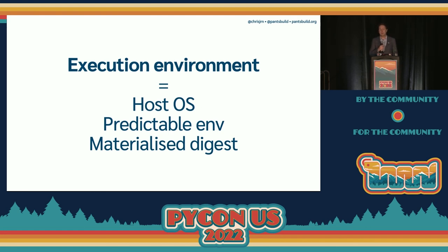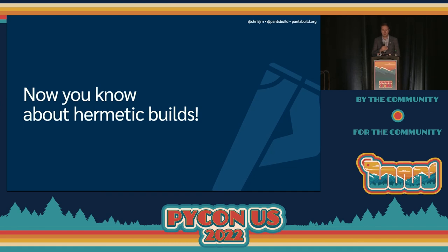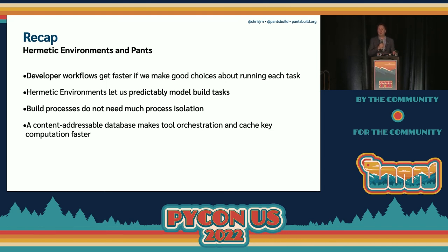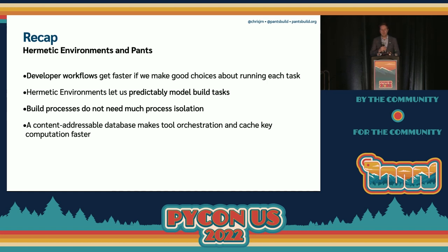For Pants, a process execution consists of the host operating system, an environment that we can predictably model, and the contents of a digest that we can reliably store inside a cache. We've done a high-level look into hermetic environments and how they unlock some of Pants' more interesting time-saving features. We saw that we can make existing Python tools run faster — or not at all — if we can make good choices about how and when tools get run. We need to predictably model processes, which requires a predictable environment. Build processes don't need a whole lot of process isolation to model their behavior predictably. And using a content-addressable database makes it cheaper to do orchestration tasks like merging dependency sets and source files, and makes it much easier to reason about file sets in a cache.